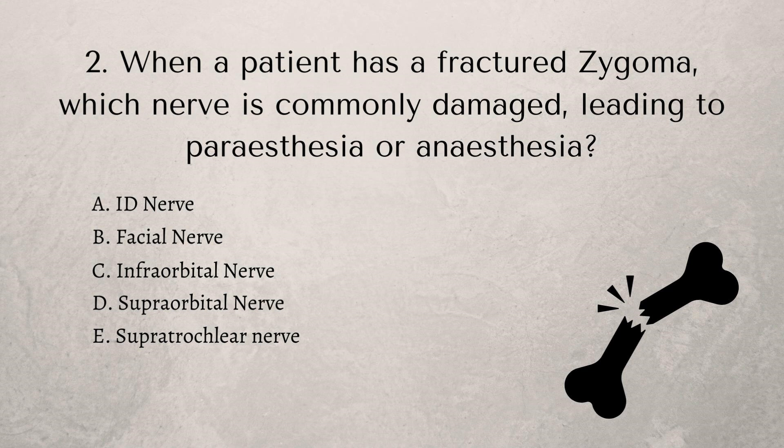It's usually focused around the zygoma or the mandible, so it's really important to know the anatomy associated with those two things in good detail. This can expand into a part two question as well — for example, listing five complications of a fractured zygoma. The supraorbital, supratrochlear, and ID nerve wouldn't commonly be damaged. The facial nerve and the infraorbital nerve are what it really comes down to, and the one most commonly damaged is the infraorbital nerve.